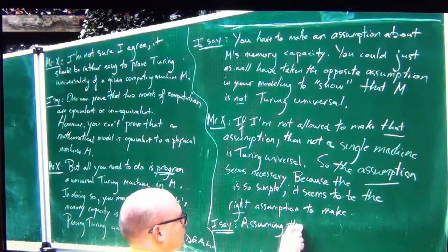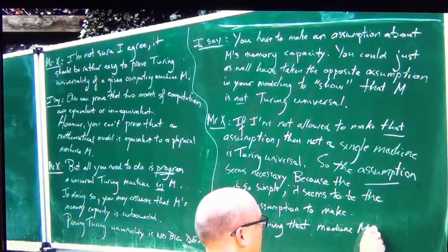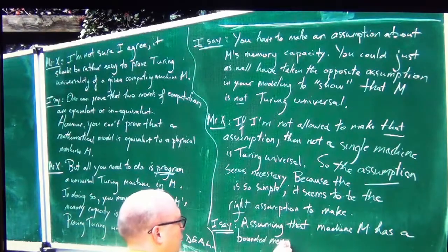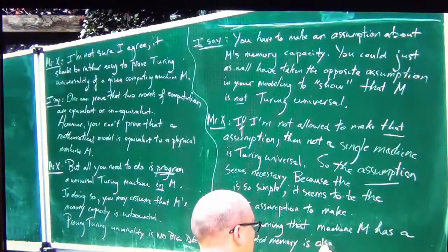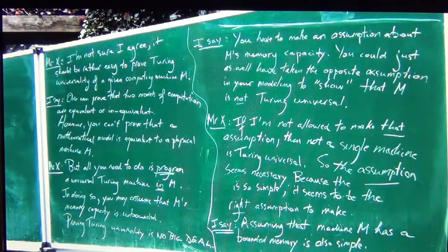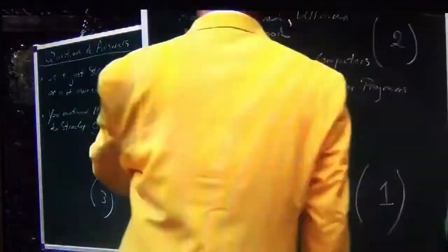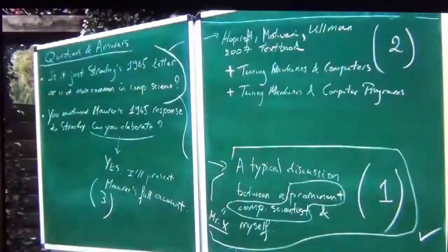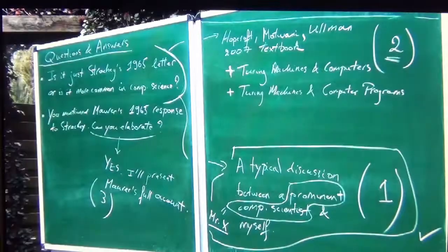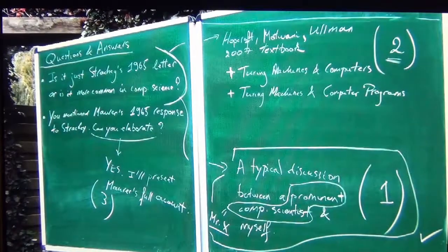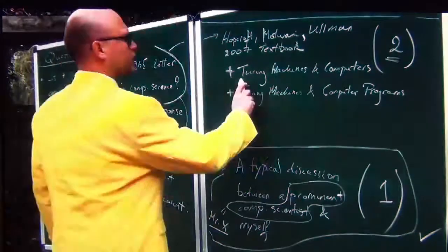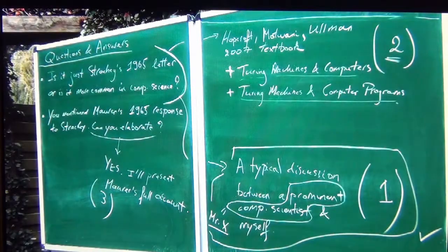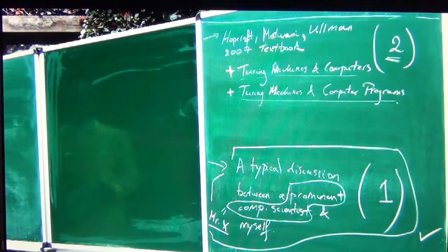My philosophy students understand that from day one; computer science students have real difficulty grasping the conflation that I'm complaining about. Now, number two: Hopcroft, Motwani, and Ullman make exactly the same kind of conflation — similar to Strachey 1965, and similar to Mr. X whom I just discussed.